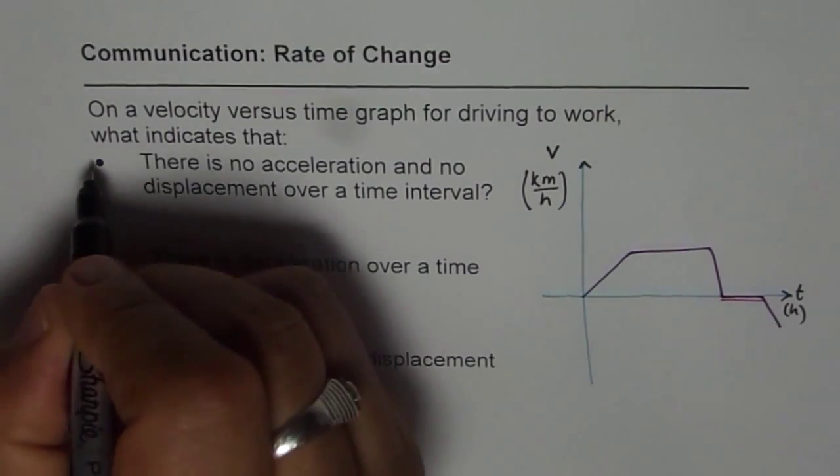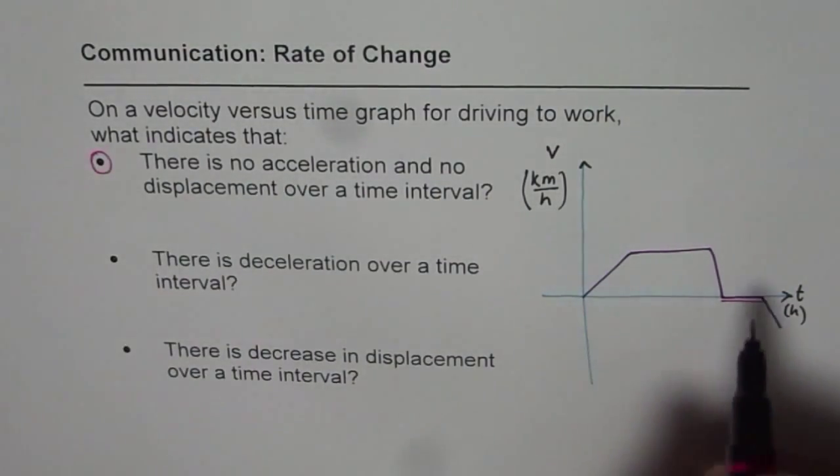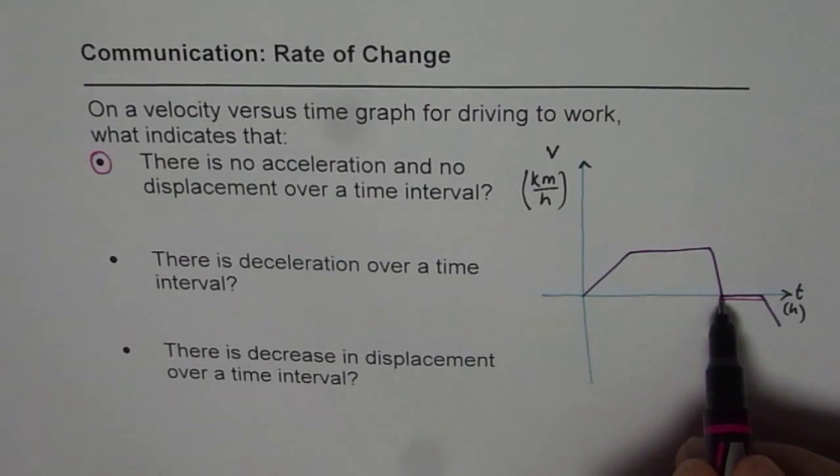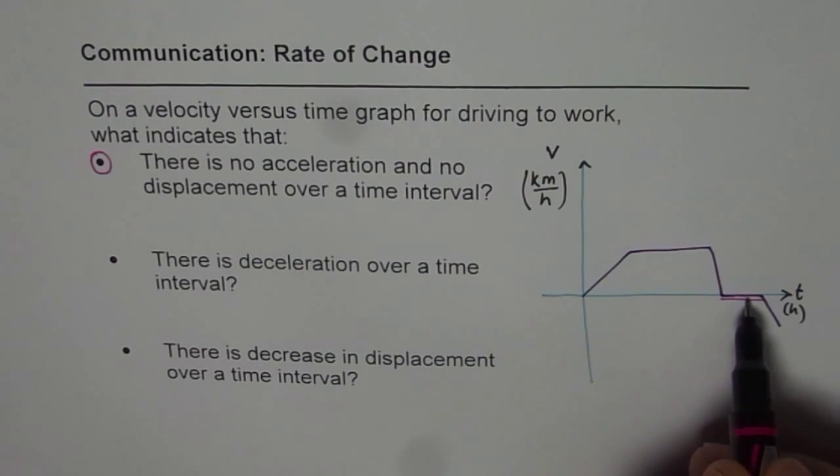So this part indicates the first thing. It is the line along the time axis where velocity is zero, so we have no acceleration and no displacement.